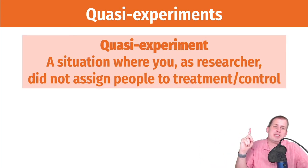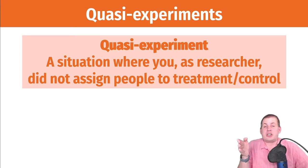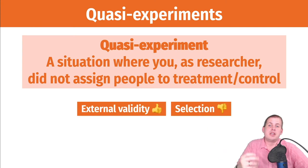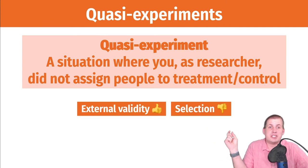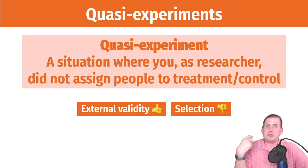The main definition to remember: in a quasi-experiment, you do not assign people to treatment or control — in an RCT you get to do that, rolling dice, flipping coins, using random.org. With quasi-experiments you don't get to assign, which means there might be some self-selection. But it also means it's a real-life experience. External validity for quasi-experiments is generally pretty great because these are things that actually happened in the world — you're not asking people hypothetically.